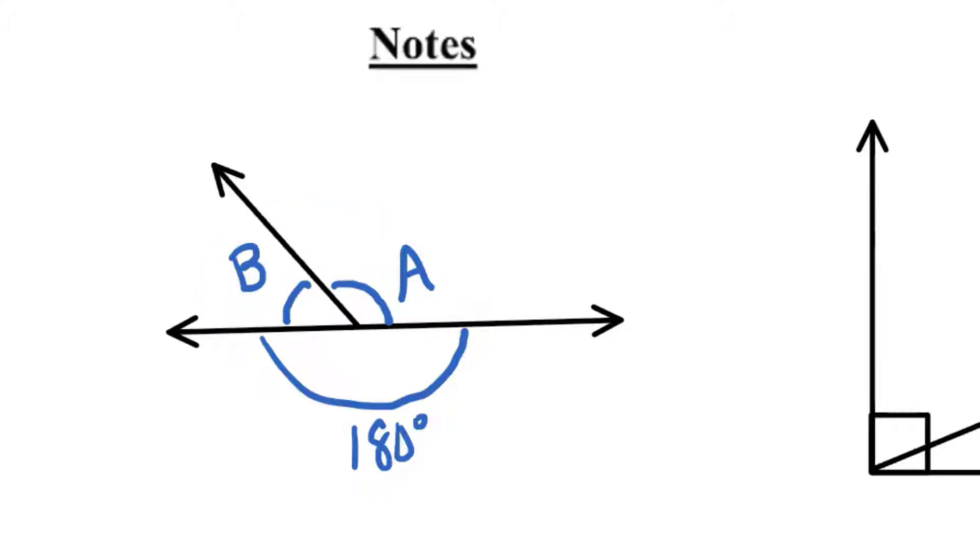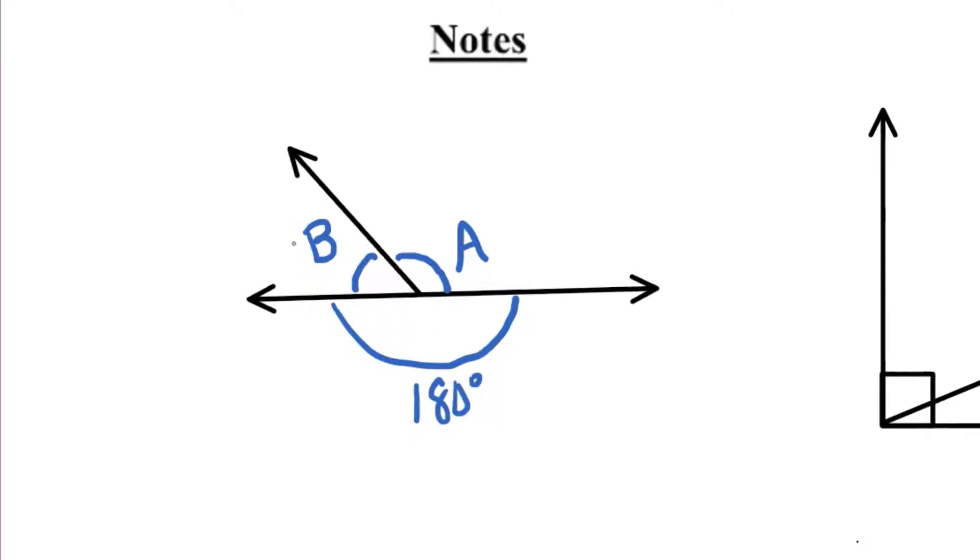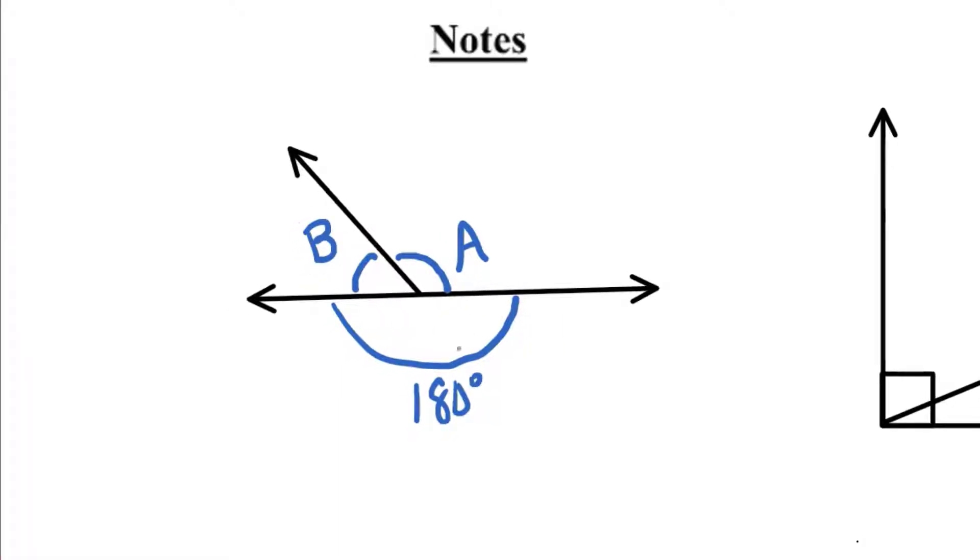So what could I say is the relationship between angle A and angle B? How do their measures relate to each other? They will add up to 180. That's right.